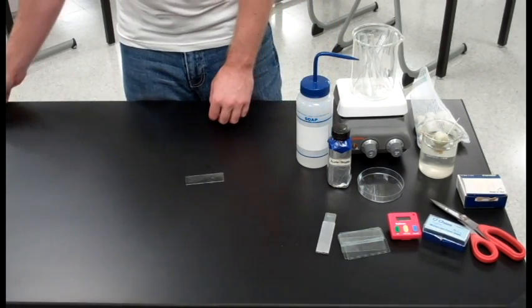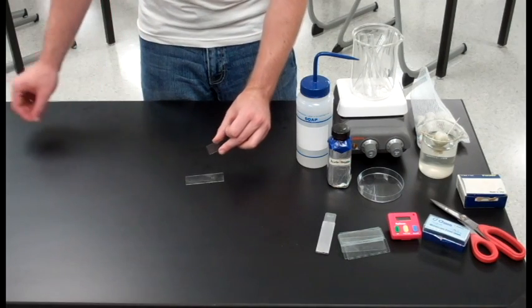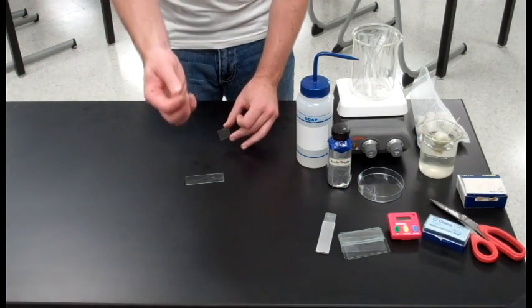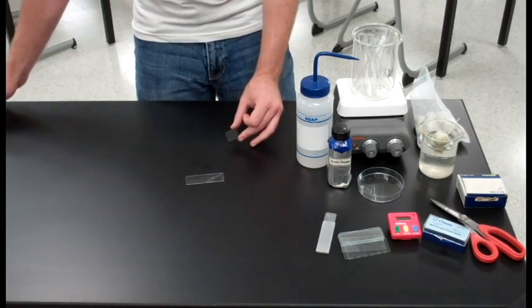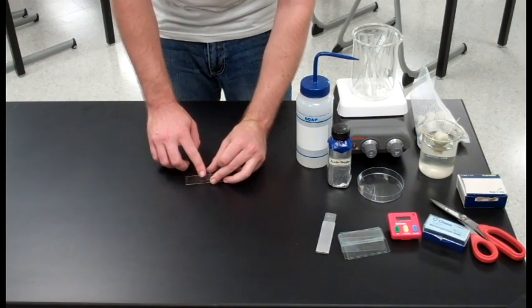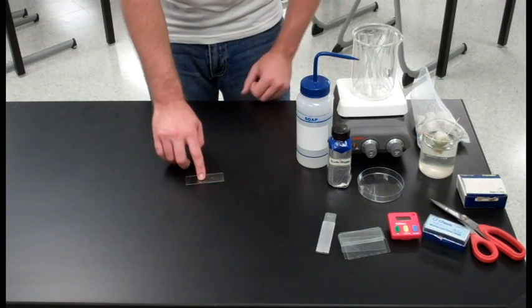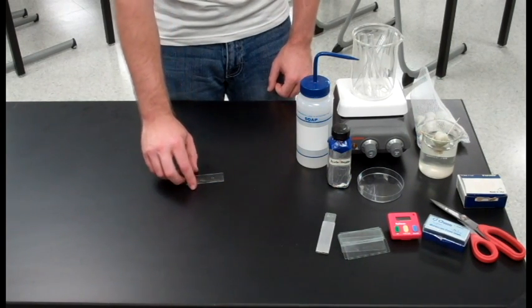The next step is going to be flattening our sample. So take a cover slip or you can use the tips of your forceps or you can use the tip of a scalpel or anything else. But the important thing is to get it squirt. So press down firmly with one finger to flatten the sample.